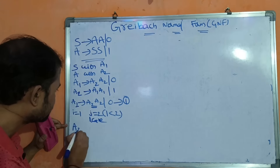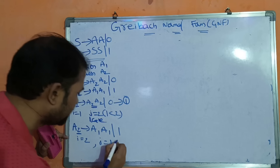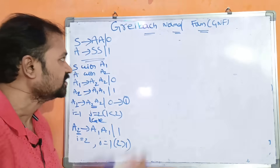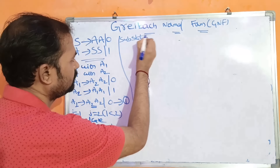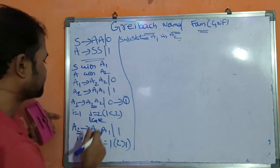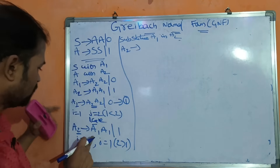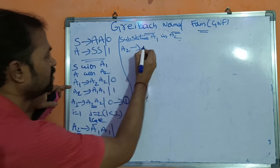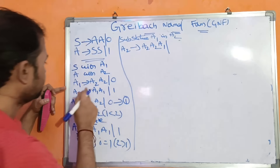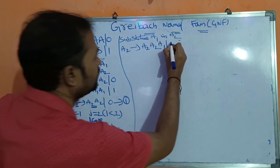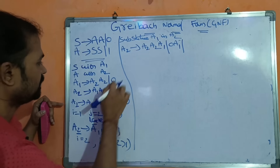Now consider the second production: A2 implies A1 A1 | 1. Here I equals 2 and J equals 1, so I is greater than J. We must perform substitution — in place of A1 in A2's production, substitute A1's productions. A1 equals A2 A2 | 0, so substituting: A2 implies A2 A2 A1 | 0 A1. Write 1 as it is.